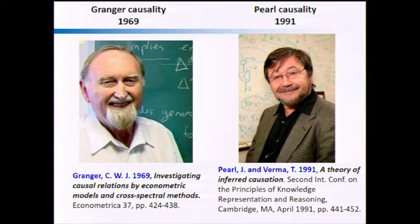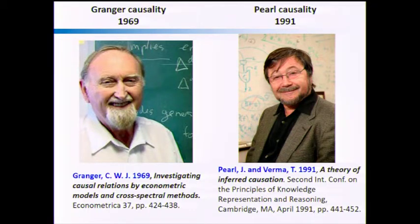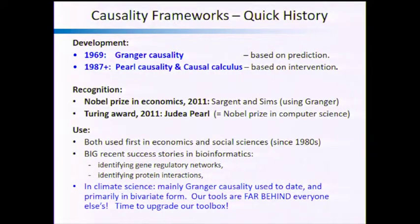There are two primary concepts for causality being used. One is Granger causality, which was developed in 1969 by Granger — he was an economist just trying to analyze time series data and figure out causal relationships. Keep in mind: 1969. Then there is Pearl causality, which came much later. Pearl developed it in the late 1980s, and the big breakthrough paper came in 1991; he's written lots of books about causality ever since. So there's over 20 years between the two.